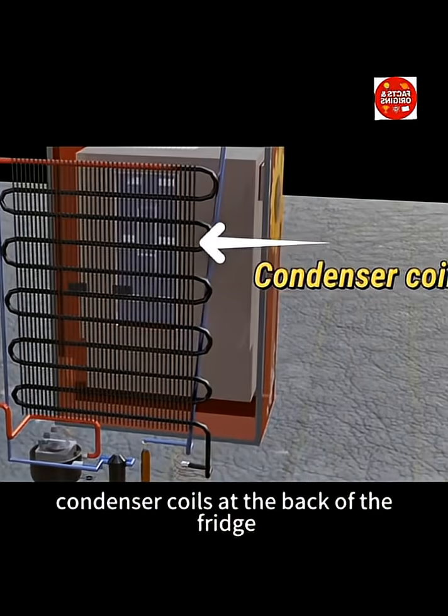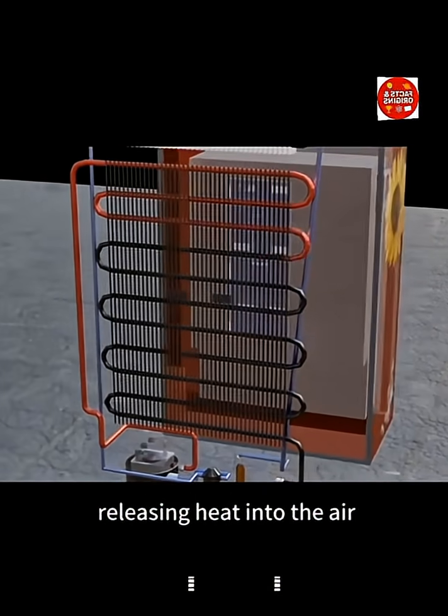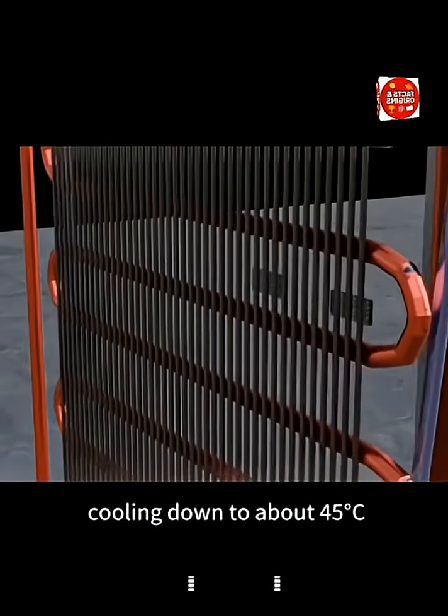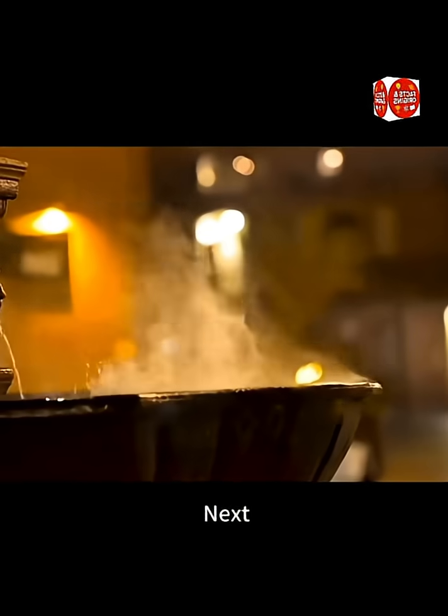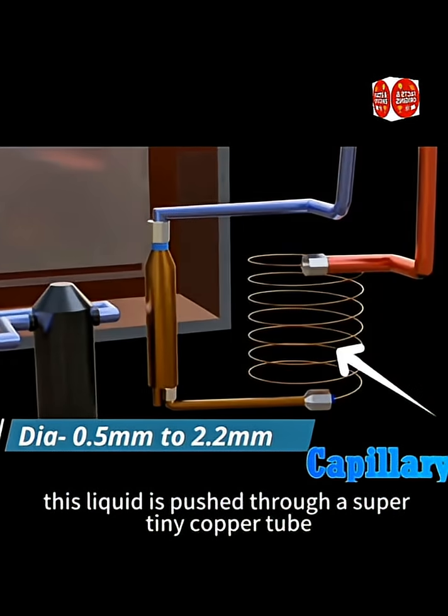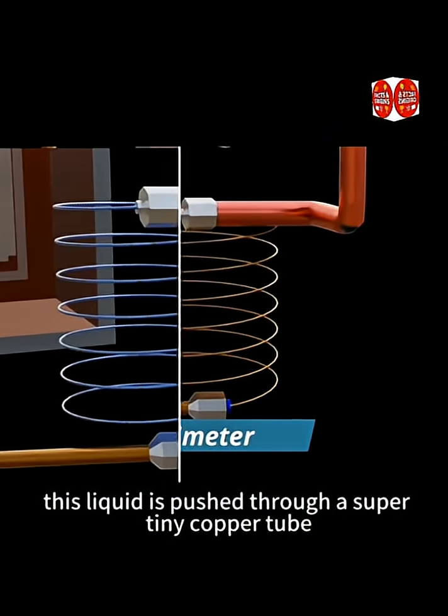The condenser coils at the back of the fridge release heat into the air, cooling the gas down to about 45 degrees Celsius and turning it into liquid. Next, this liquid is pushed through a super tiny copper tube, and the pressure drops instantly.